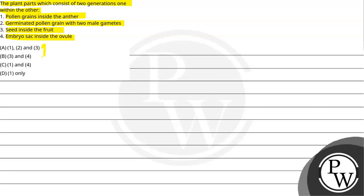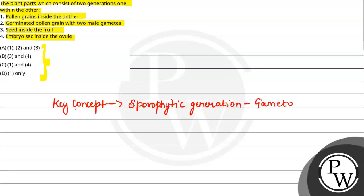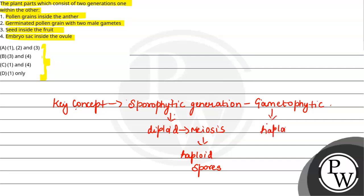The key concept here is sporophytic generation and gametophytic generation. The sporophytic generation is diploid and the gametophytic generation is haploid. When we divide by meiosis we create haploid spores, and from the gametophytic generation we create haploid gametes.